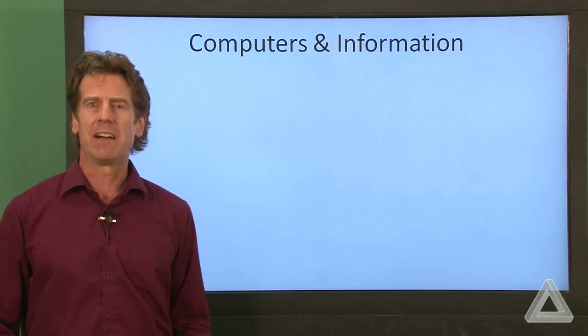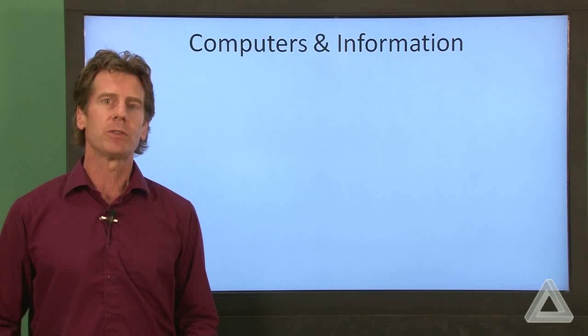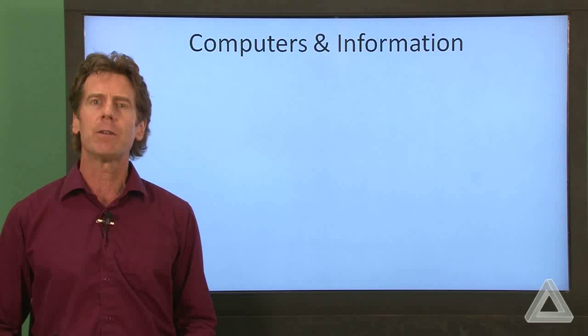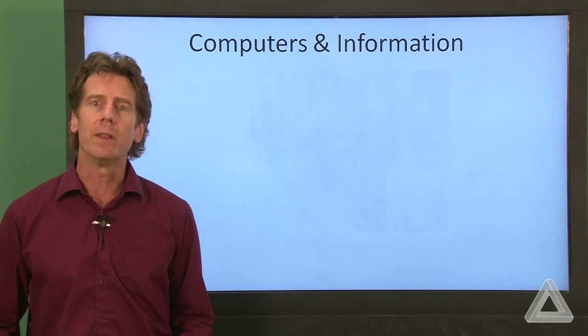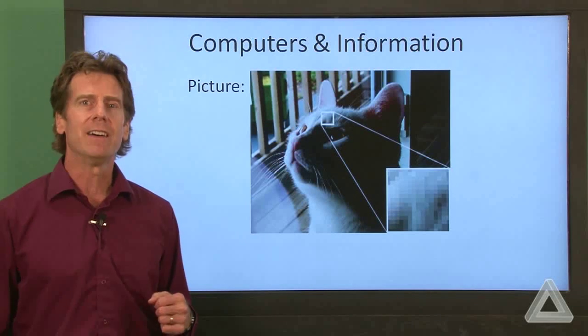Okay, the mapping from characters to bits is straightforward enough. But you know that you could also use your computer to look at pictures. So how do we do that? How do we represent a picture with bits?